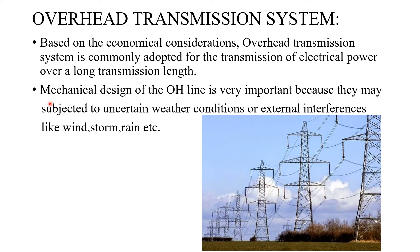We have two transmission systems: overhead transmission system and underground transmission systems. But based on economical considerations, overhead transmission system is commonly adopted for the transmission of electrical power over a long transmission length. In this overhead transmission system we can transfer large amounts of electrical power through the transmission lines.